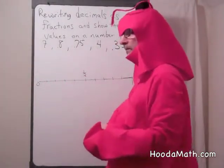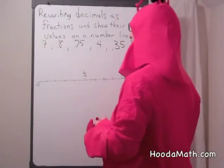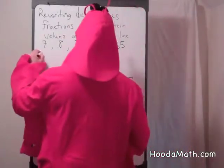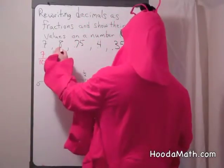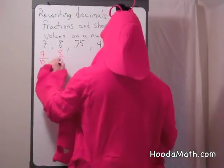Instead of saying 0.7, we say 7 tenths. It's very easy to rewrite that then. 8 tenths.